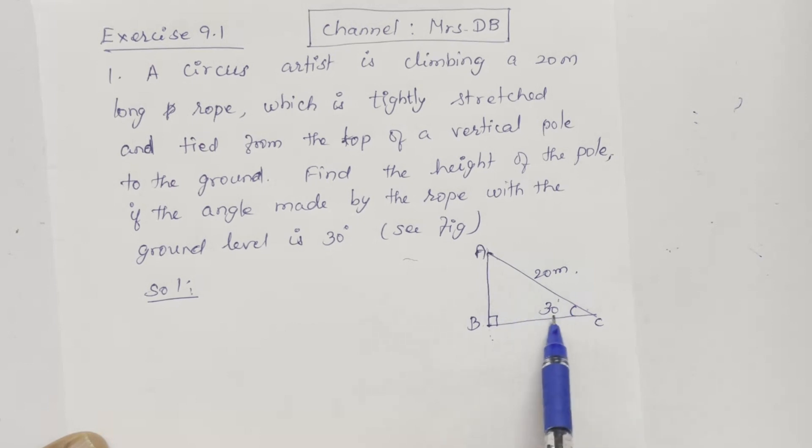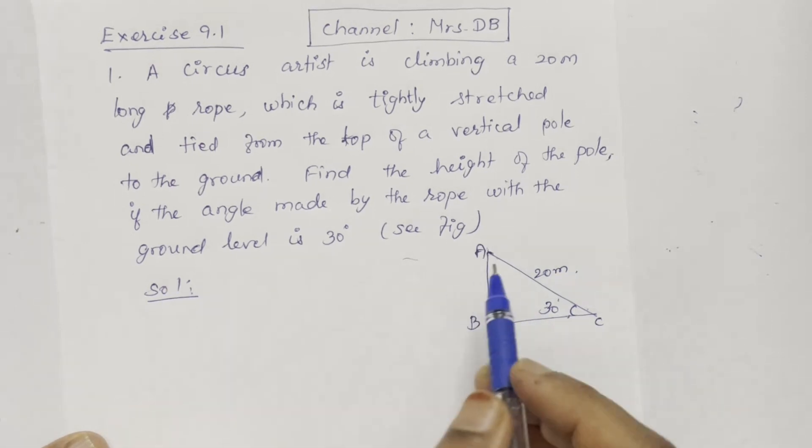The rope made with the ground angle is 30 degrees. We will calculate the height of the pole.